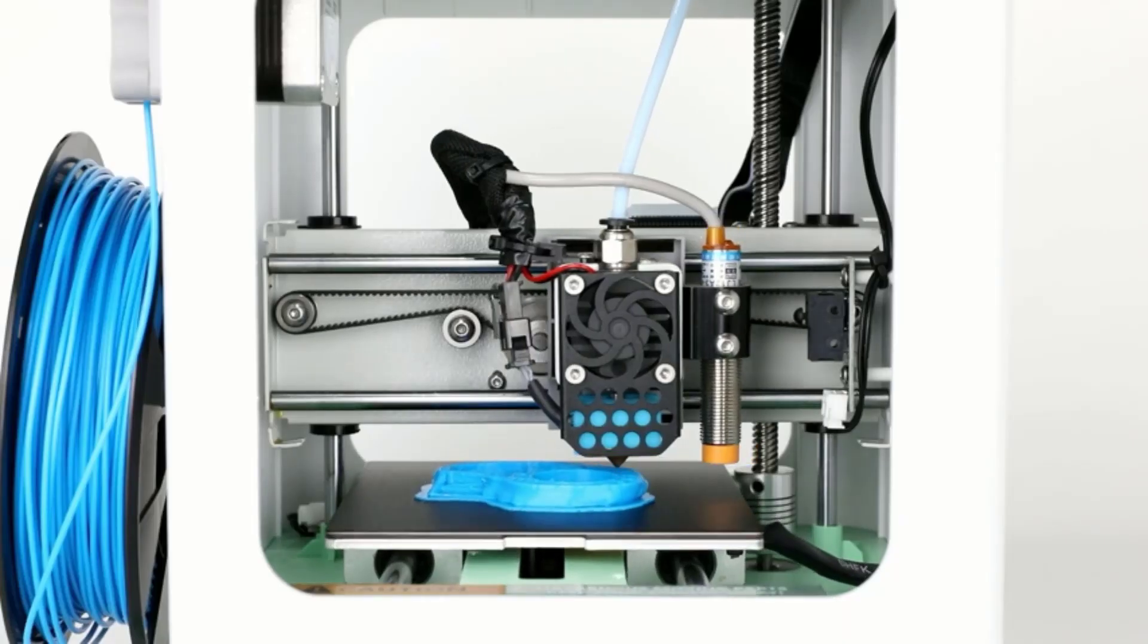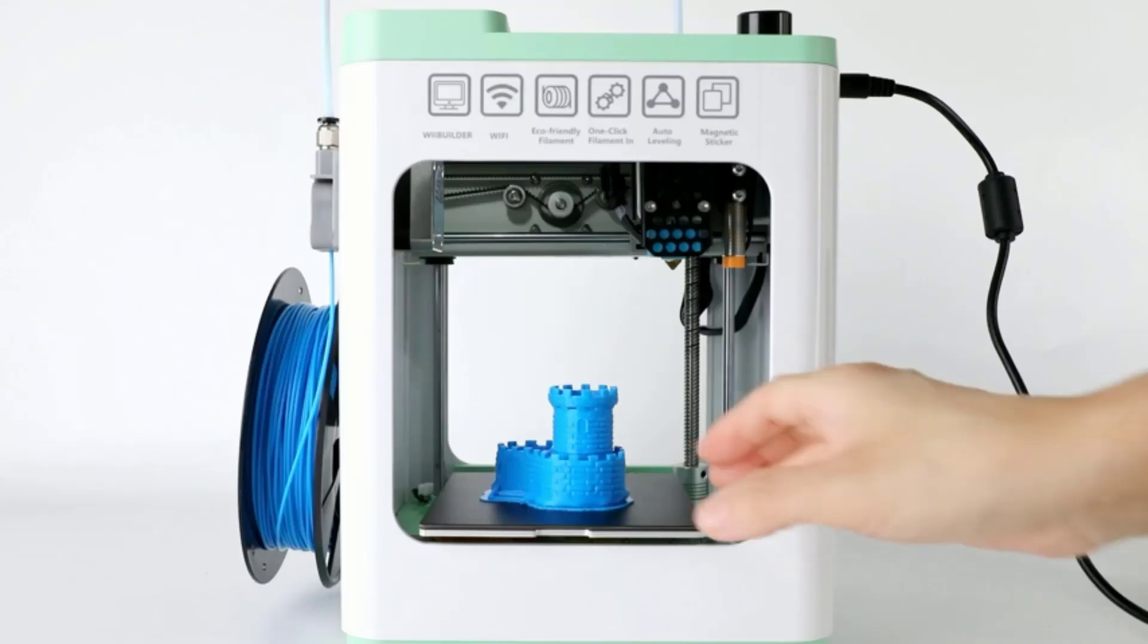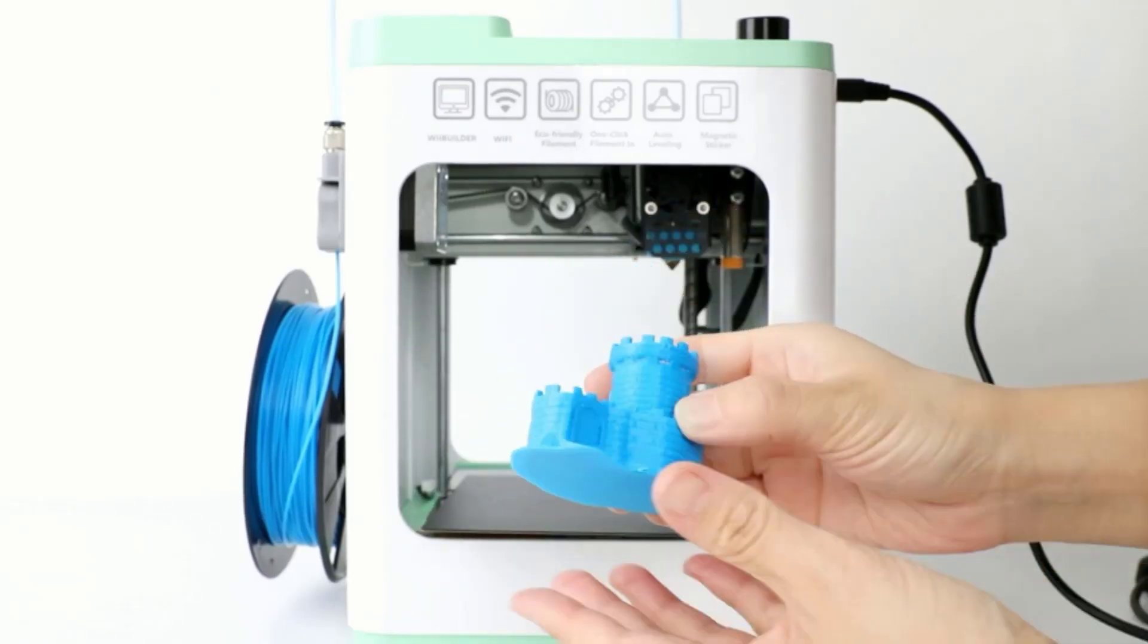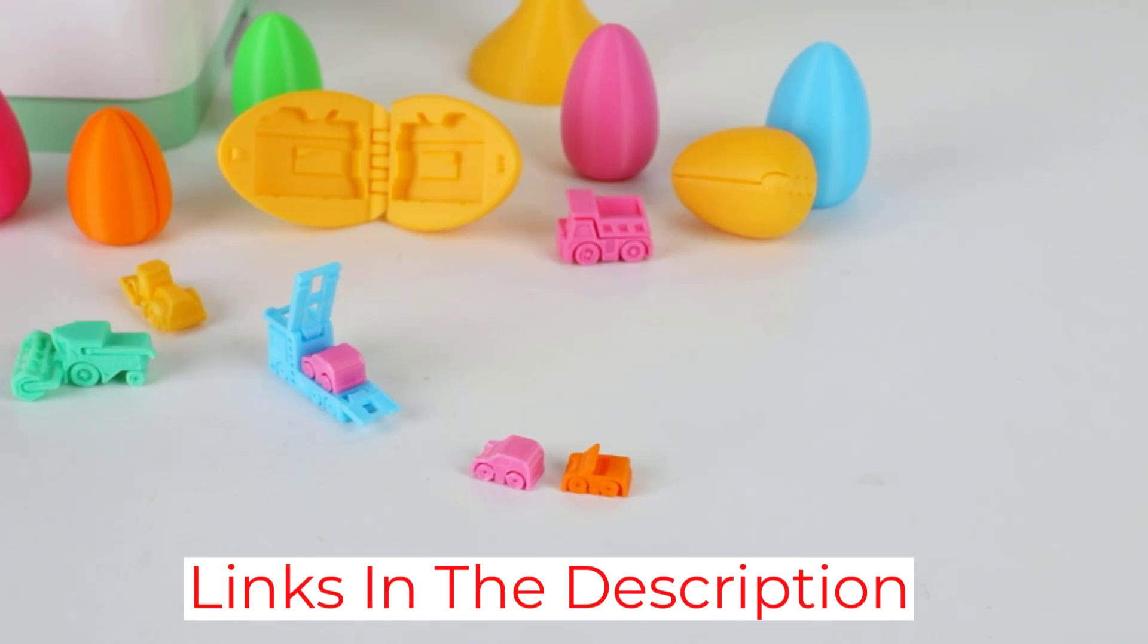Auto-leveling and removable magnetic platform are other features that make it beginner-friendly. The intelligent leveling system will adjust the uneven print bed automatically and the magnetic platform will help you remove your models easily without causing any damage.